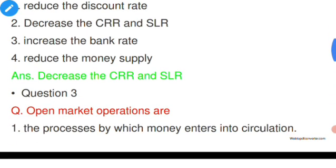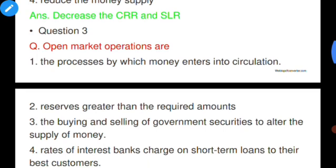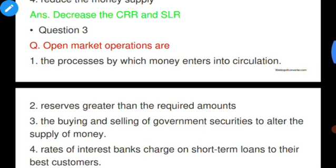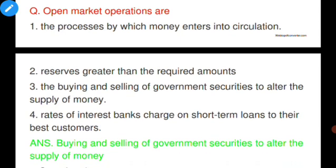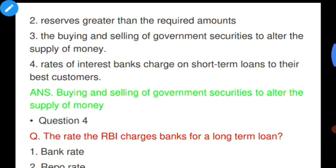Question number three: Open market operations are — options: the process by which money enters circulation; reserves greater than required amounts; the buying and selling of government securities to alter the supply of money; or the rate interest banks charge on short-term loans to their best customers. Option three is correct: open market operations are the buying and selling of government securities to alter the supply of money.